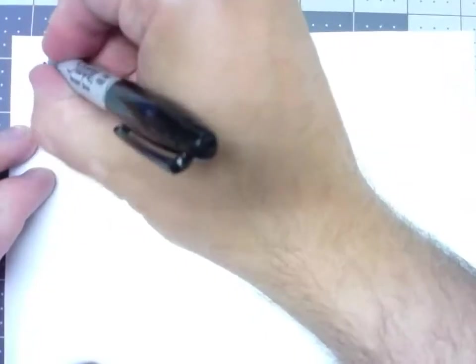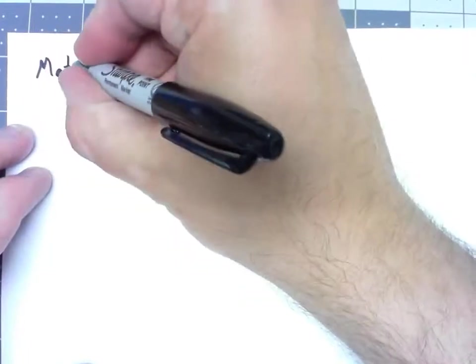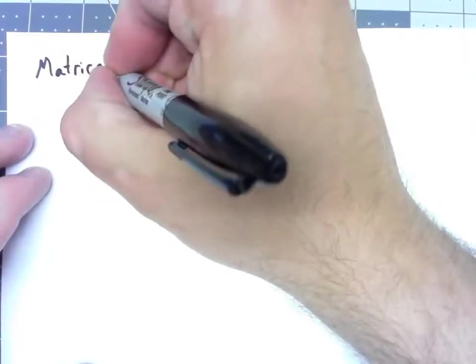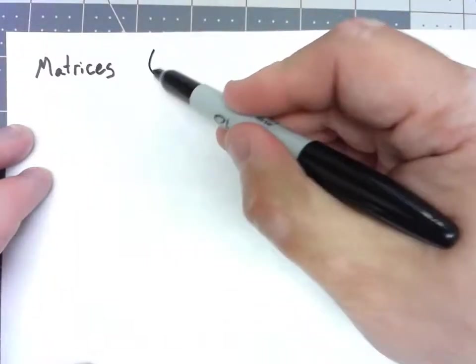Let's look at a couple more examples of groups. The first one I want to take a look at involves matrices. Specifically, I want to look at 2 by 2 matrices.